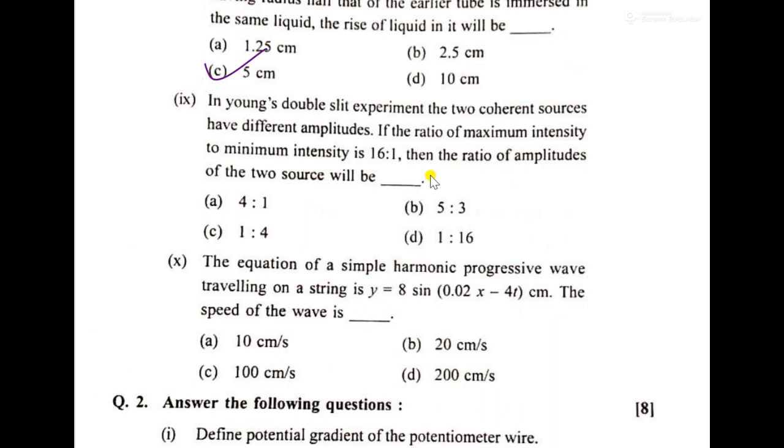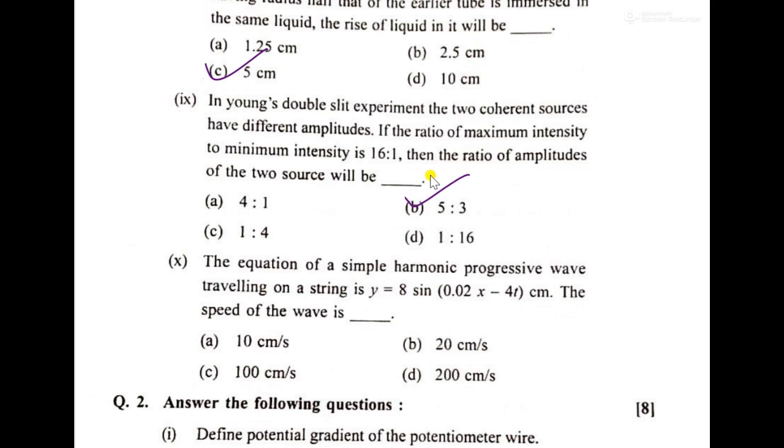If the ratio of maximum intensity to minimum intensity is 16 is to 1, then the ratio of amplitudes of the two sources will be 5 to 3.